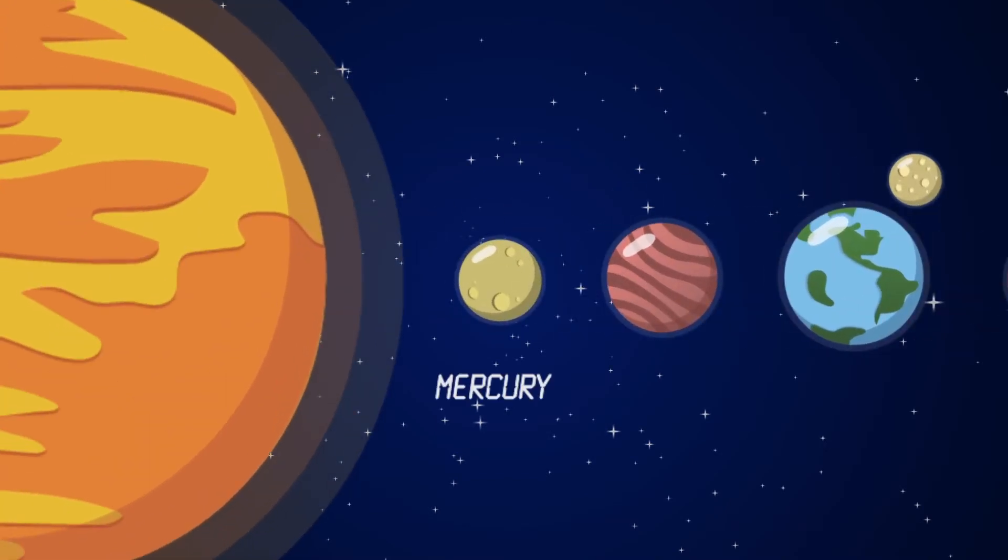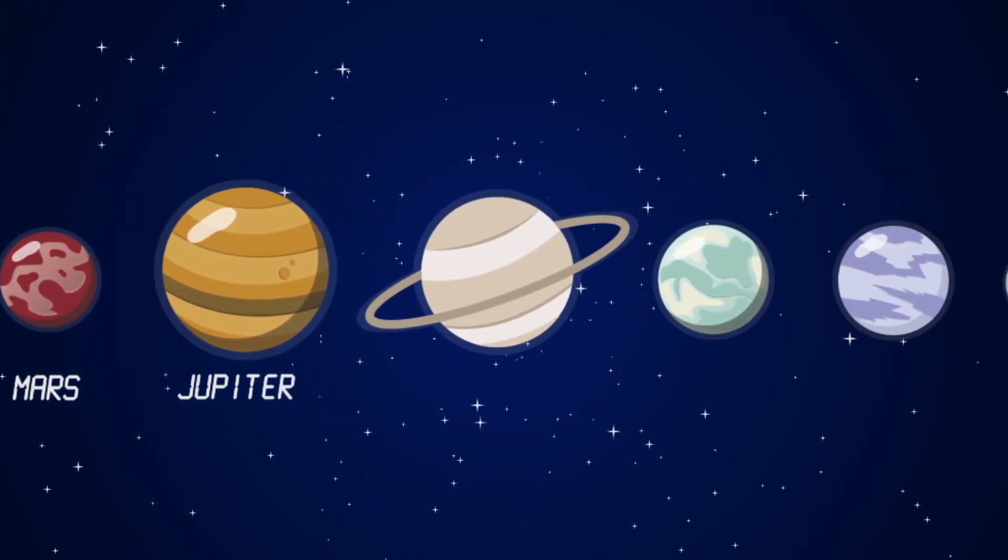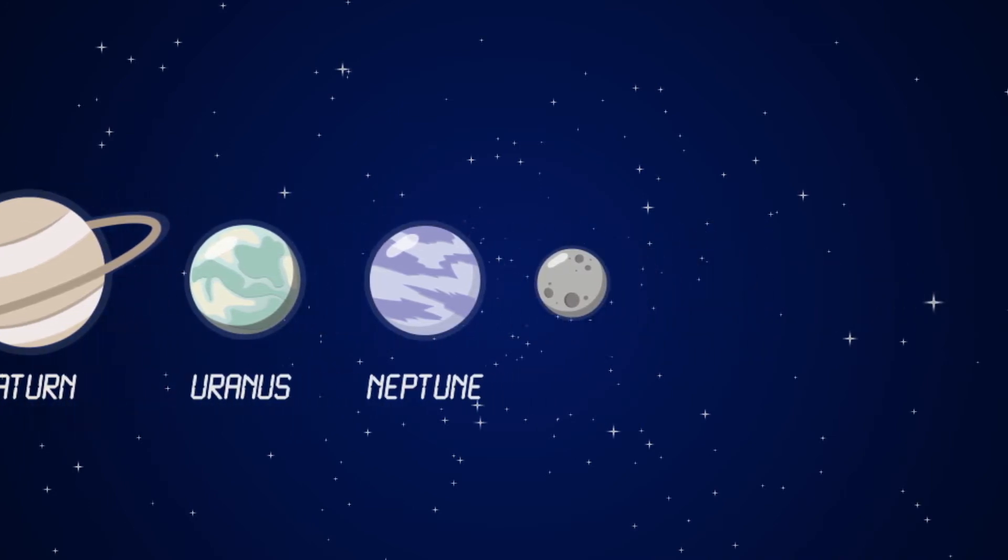The nine planets are Mercury, Venus, Earth, Mars, Jupiter, Saturn, Uranus, Neptune, and Pluto.